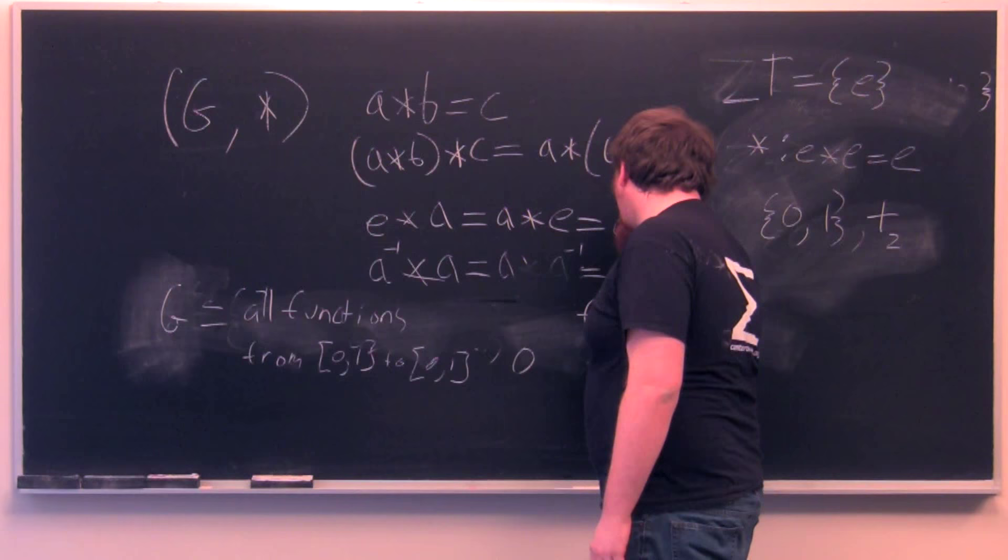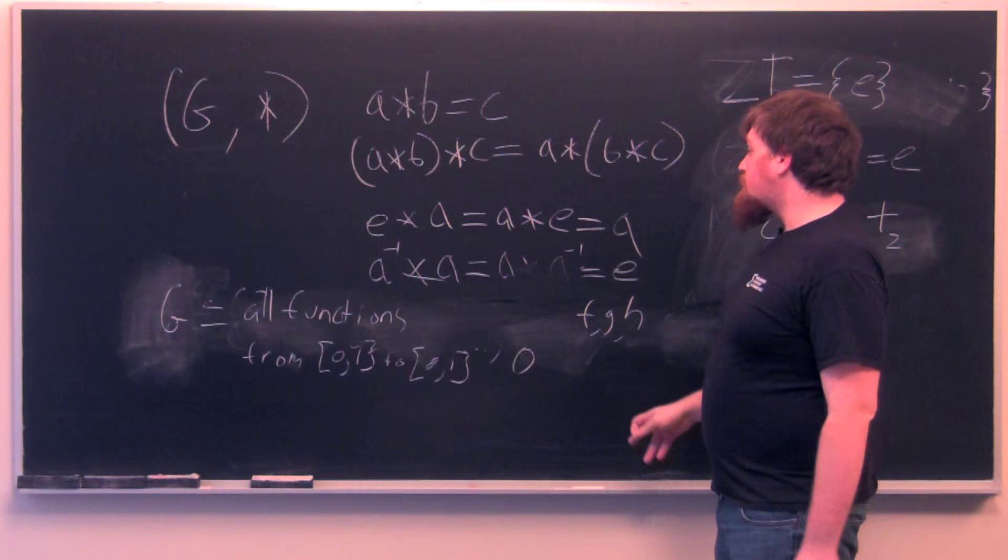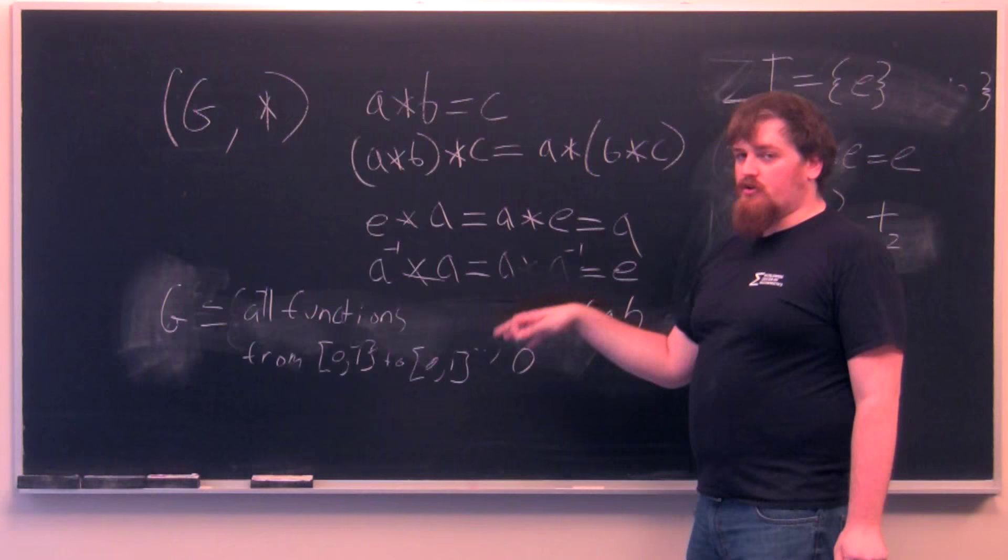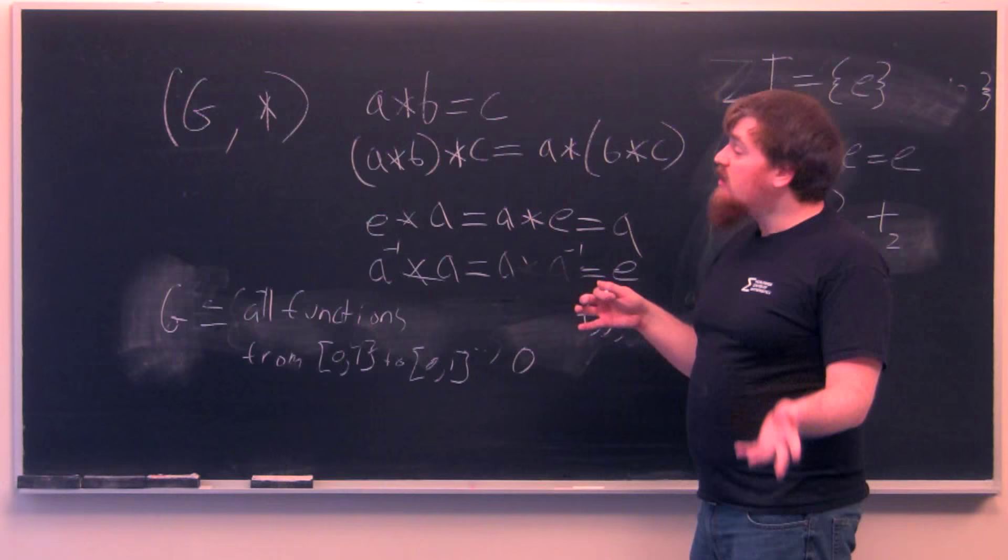So we can check to see if this is a group. Clearly the composition of any function which has domain 0, 1 with another such function is going to be another of that kind of function. So the operation is total.